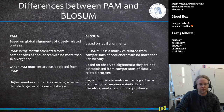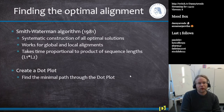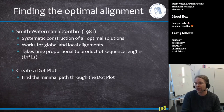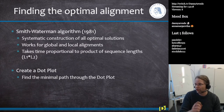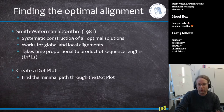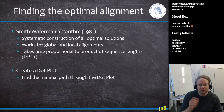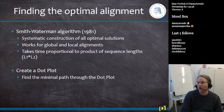Finding the optimal alignment was solved in 1981. Smith and Waterman published their algorithm for finding the optimal alignment, which under all circumstances will find the optimal alignment between two sequences. It works for both global and local alignment through systematic construction of all optimal solutions. The big problem is that it takes time proportional to the product of the sequence lengths.